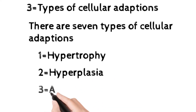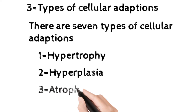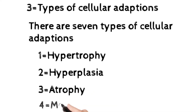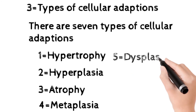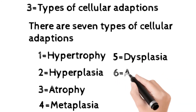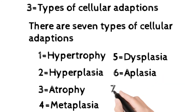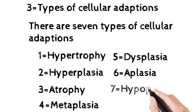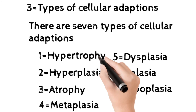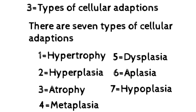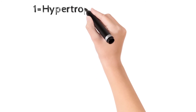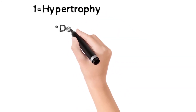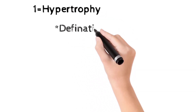Now come to the types of cellular adaptation. There are seven types: number one is hypertrophy, number two is hyperplasia, number three is atrophy, number four is metaplasia, number five is dysplasia, number six is aplasia, and number seven is hypoplasia. We will study each one in detail covering definition, mechanism, and examples — both physiologic and pathologic.